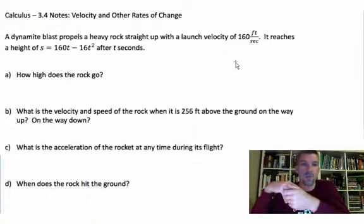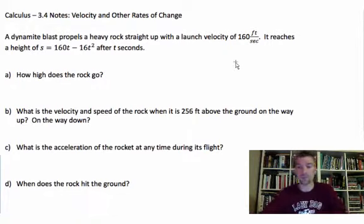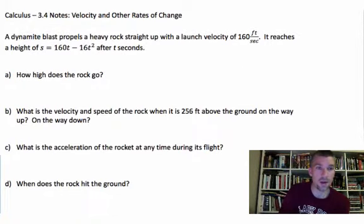So a dynamite blast propels a heavy rock straight up with a launch velocity of 160 feet per second. It reaches a height of S equals 160T minus 16T squared after T seconds. So what they've given us right off the bat here is the position function. Do you see it? Right here. Here's my position. Bam, right there.